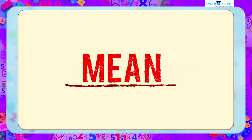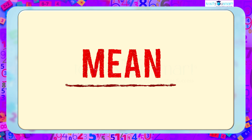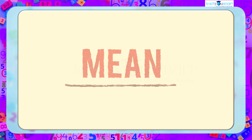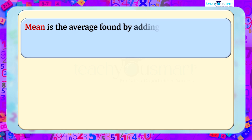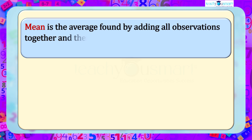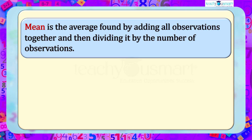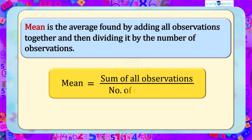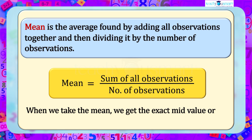Here we recall the concept of mean. What is mean? We have already learnt mean in our previous grades. We can say that the mean is the average found by adding all observations together and then dividing by the number of observations. That is, mean equals the sum of all observations divided by the number of observations. When we take the mean, we get the exact mid-value or the midpoint of the given observations.